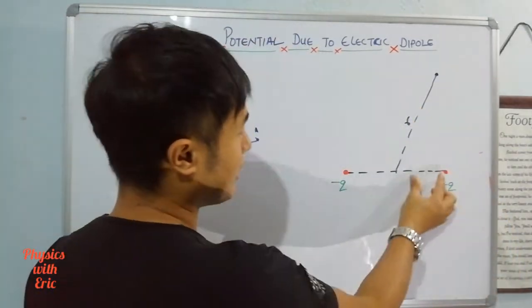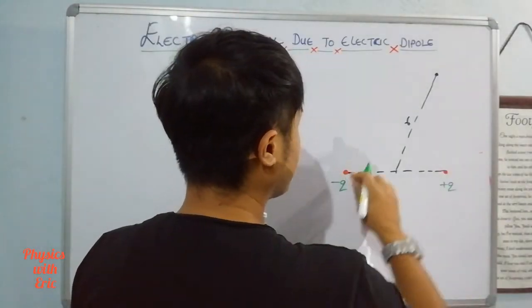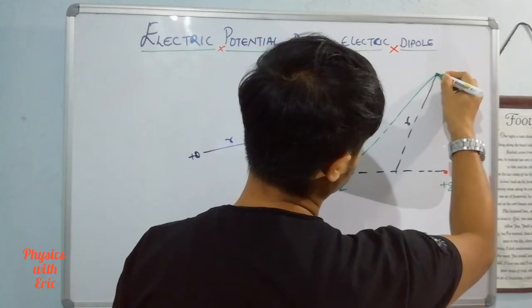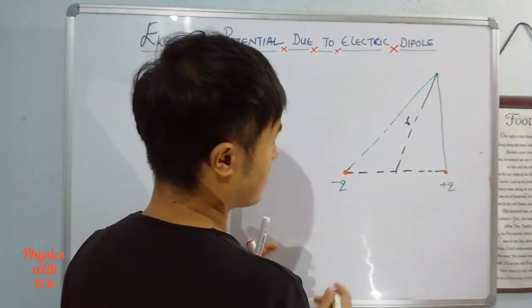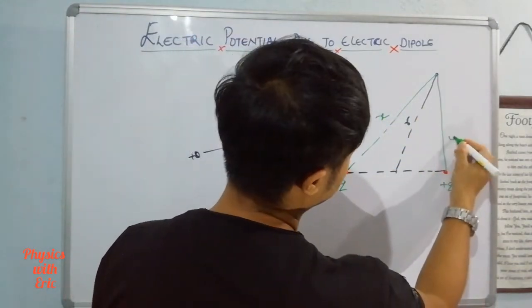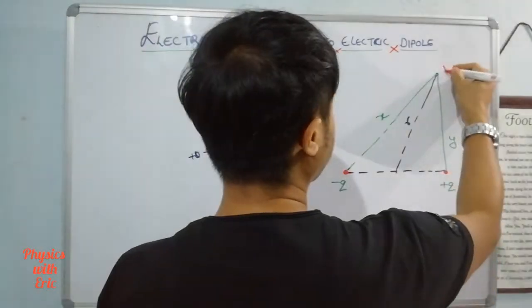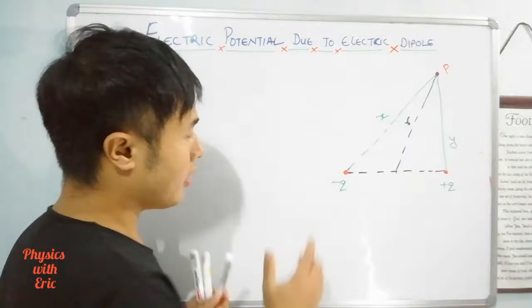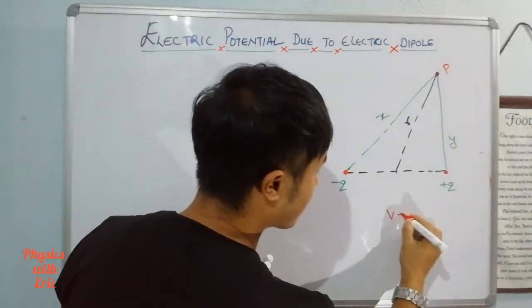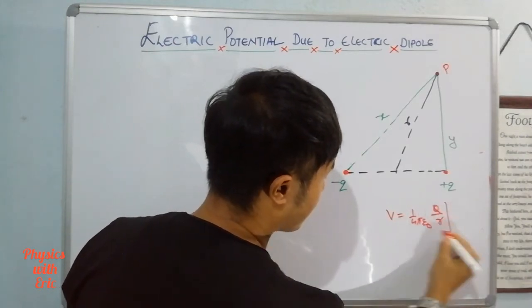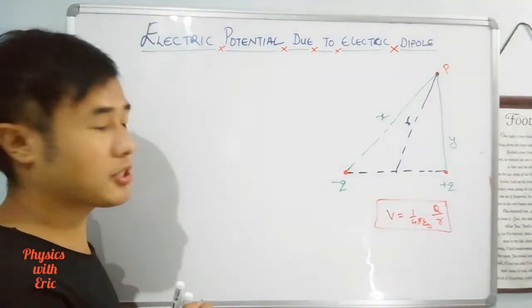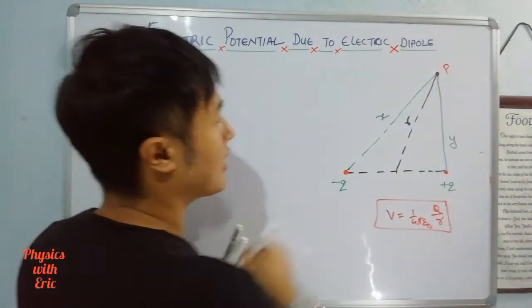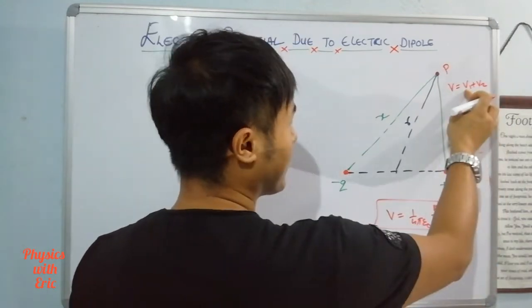The distance from minus q is denoted x and from plus q is denoted y. We know from before that the electric potential due to a point charge is V equals to 1 by 4 pi epsilon naught times q by r. The total electric potential at point P due to both minus q and plus q is V equals to V1 plus V2.